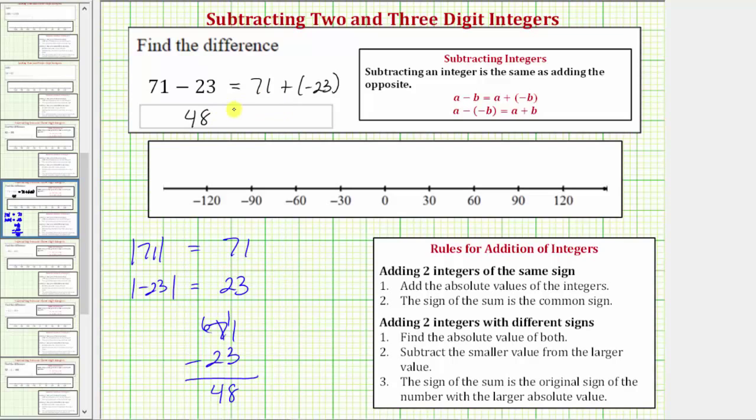And then finally, let's show this sum on the number line. So to model 71, we begin at zero, and because we have 71, we move right 71 units to positive 71.